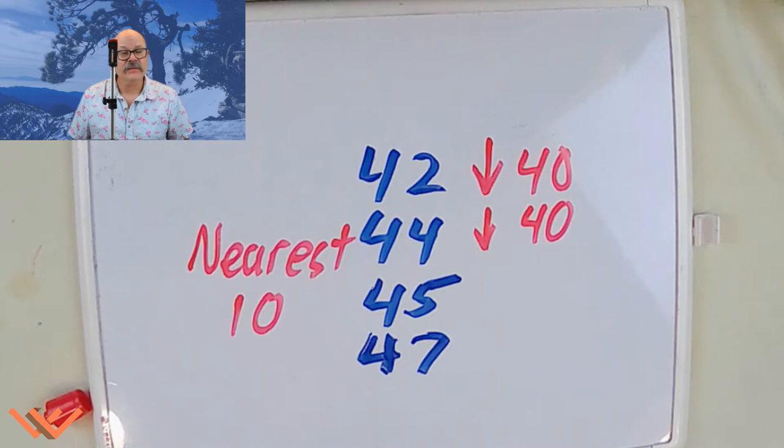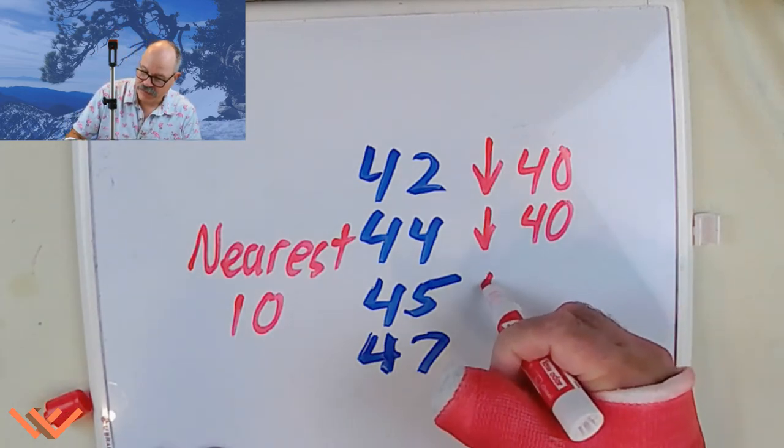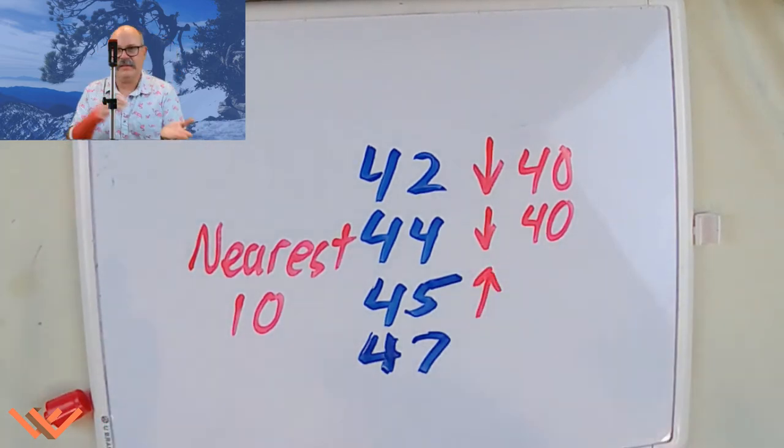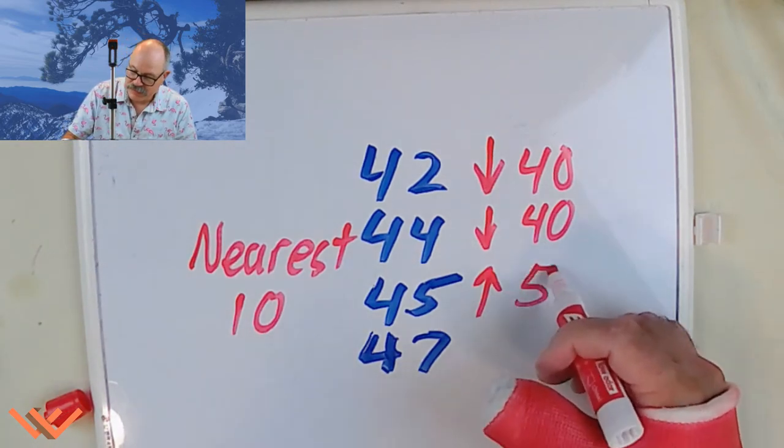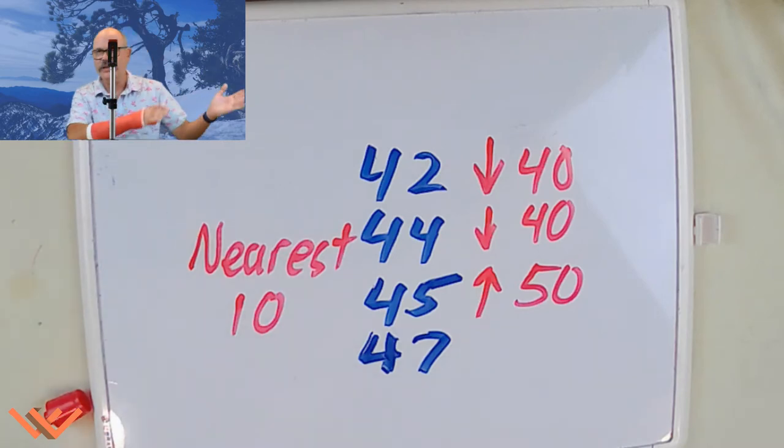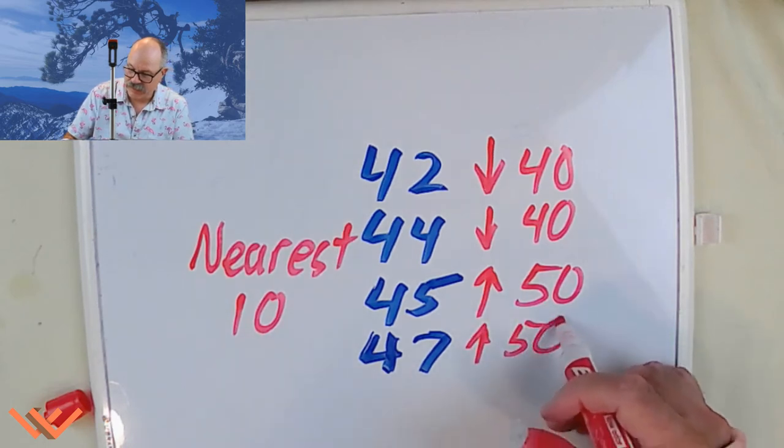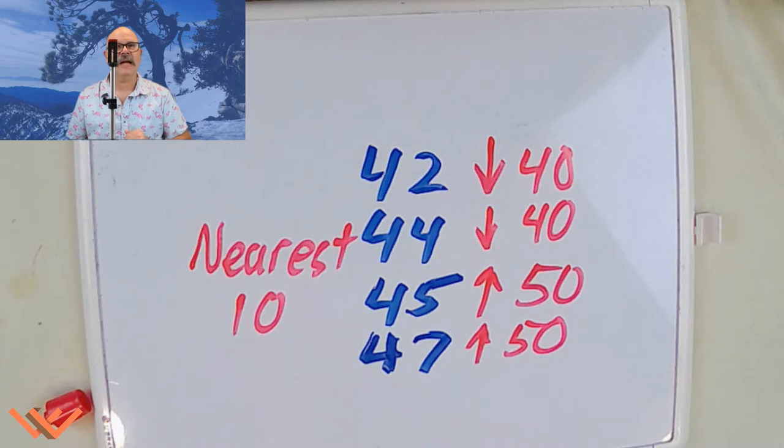But 45 is halfway between. Well yeah, but let's take a look at it this way. 46, 47, 48, 49, 50, right? We go up. We're going to go up no matter what. Even if you think that's middle, it's going to go up to 50. And then 47, that should be self-evident. It is absolutely closer to 50. So again, we're going to round up. That's what rounding down and rounding up means.